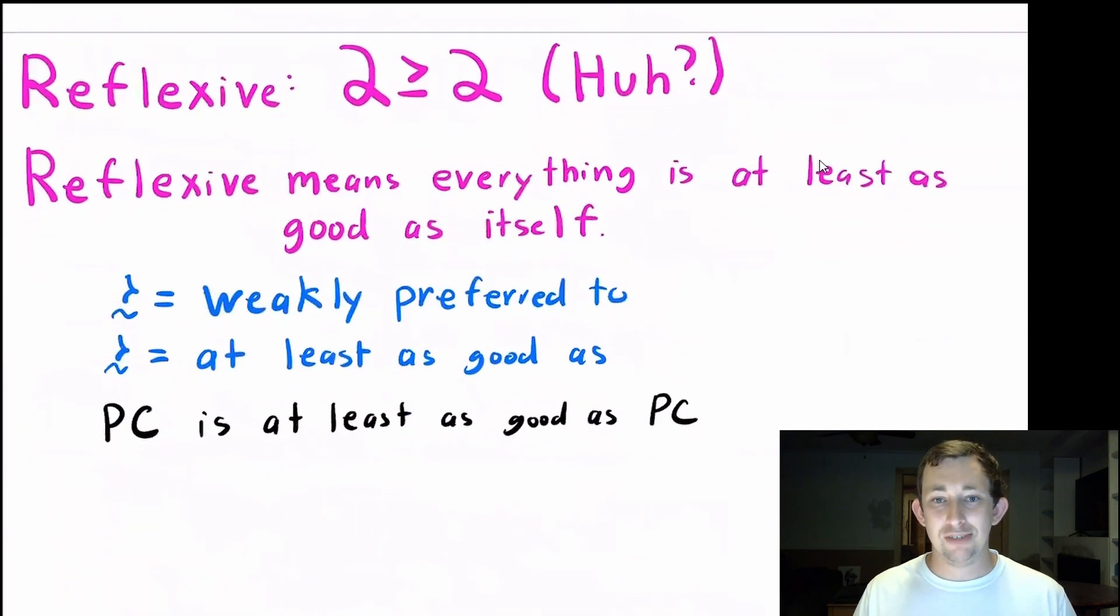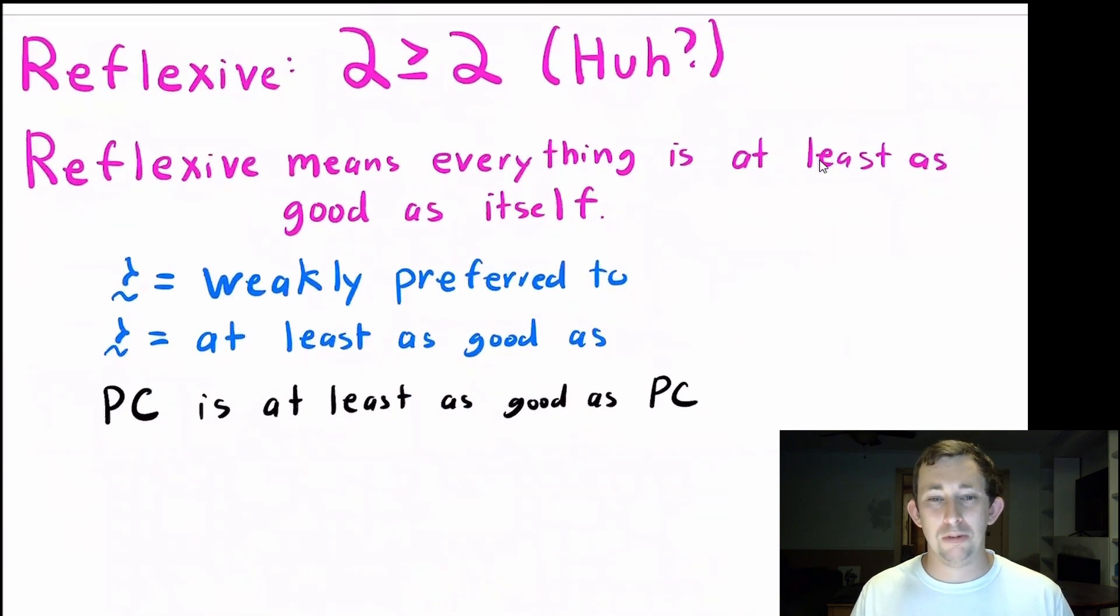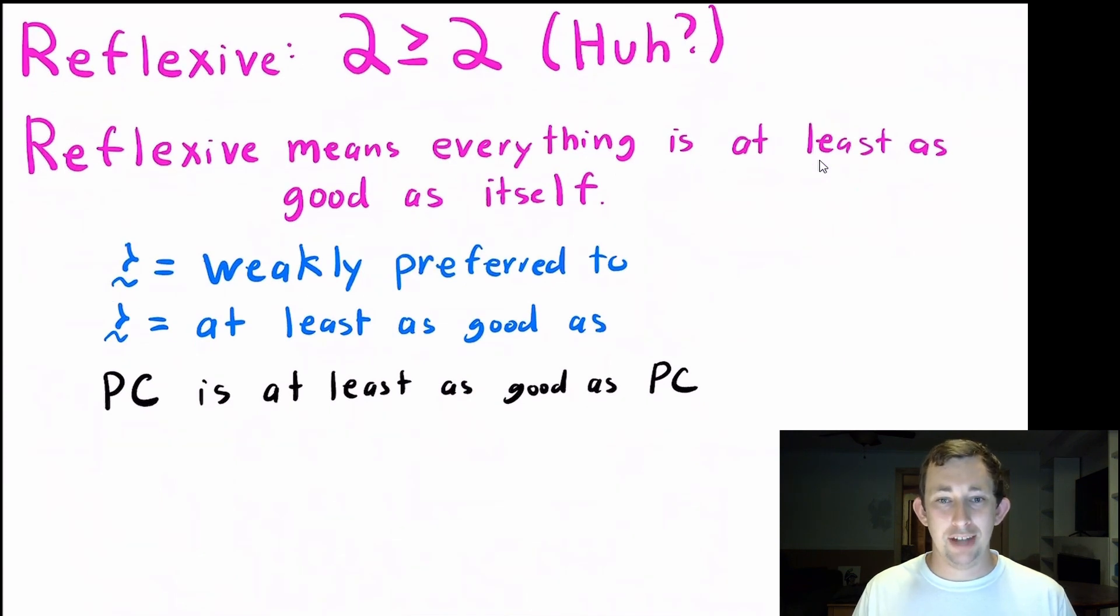Now reflexive is kind of strange. Reflexive is like in math, where we say two is greater than or equal to two. And you're like, I guess two is greater than or equal to two, but it seems sort of weird to say that it's a condition we need in order to satisfy rationality. So everything is at least as good as itself.